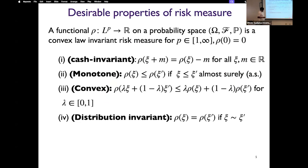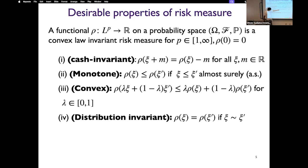We want these risk measures to satisfy certain nice properties. We say a functional rho, which takes a random variable as input and outputs a real number, is a convex law-invariant risk measure if it satisfies four properties. First is cash invariance: if you inject m dollars into a risky position psi, then the risk of that position should reduce by m. Second is monotonicity: if psi is almost always less than or equal to psi prime, then the risk of psi should be less than or equal to the risk of psi prime. Third, the risk measure should encourage diversification. And lastly, if two random variables have the same distribution, their risk should be the same.